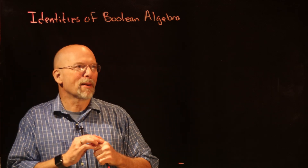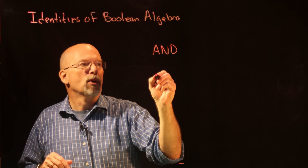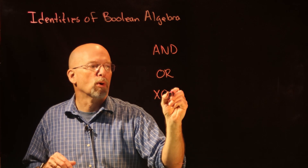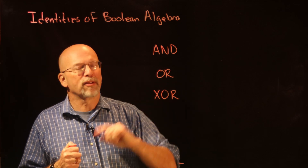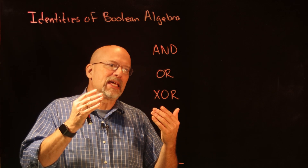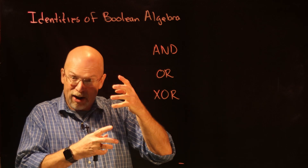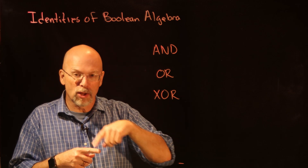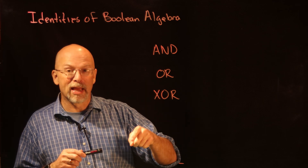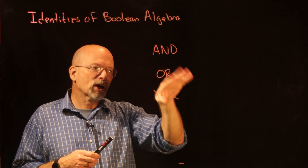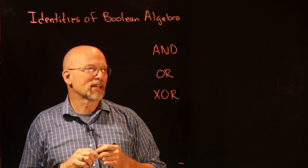Let's talk about our three logic operations: AND, OR, and exclusive OR. We haven't talked a lot about exclusive OR in boolean algebraic expressions, because it turns out that exclusive OR itself is not a low-level gate. AND is like a series of switches, OR is like parallel switches, but exclusive OR doesn't have that kind of configuration. Exclusive OR is made up of ANDs, ORs, and NOTs.